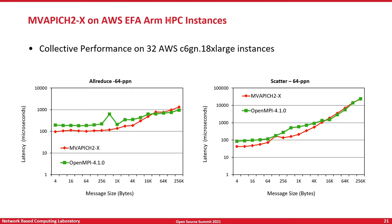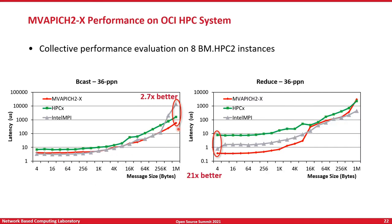Now let's see how these designs translate to HPC clouds like Amazon Web Services EFA ARM HPC instances. Here we compare MVAPICH2 versus another popular MPI runtime called OpenMPI. For collective communication patterns — critical ones like AllReduce and Scatter — the MVAPICH2X runtime is able to outperform OpenMPI by a fair margin. We also look at MVAPICH2X versus competing runtimes on Oracle's OCI HPC cloud ecosystem, measuring collective operations on eight BM.HPC2 instances. Looking at Broadcast and Reduce collectives, MVAPICH2X is able to outperform competing MPI libraries by large orders of magnitude for different message sizes.